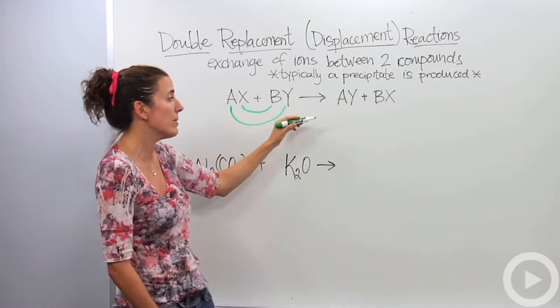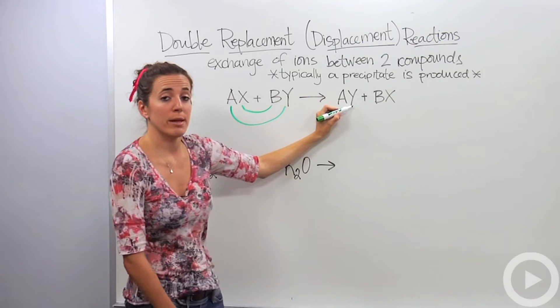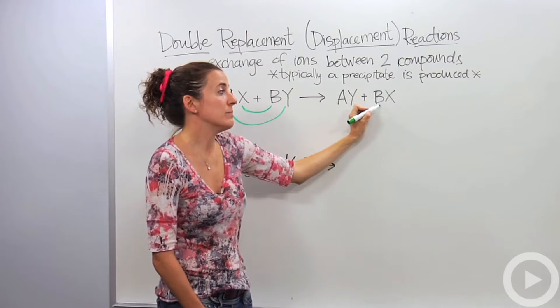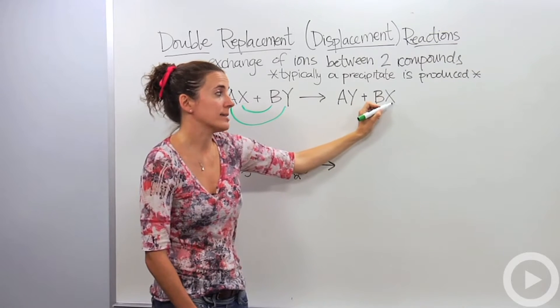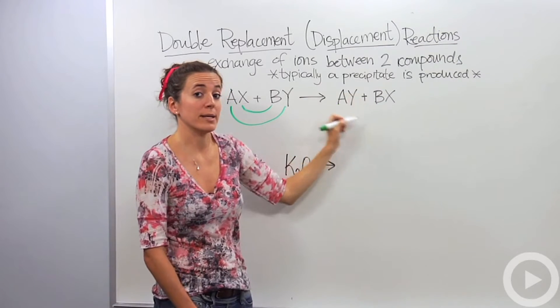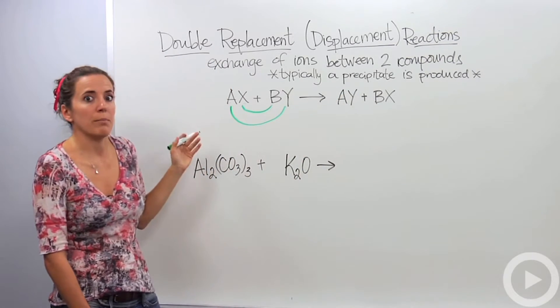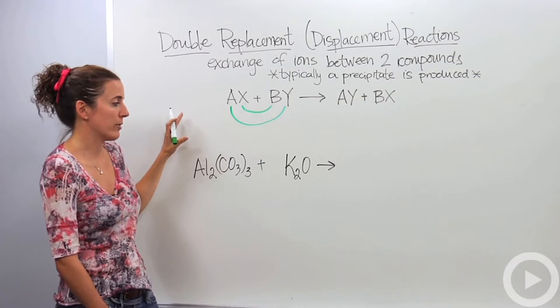Do not ever write the non-metal first. So in this case what's going to happen is AY is going to be a product, A is a metal, don't forget, and Y is our non-metal, plus BX. B is our metal, X is our non-metal. Don't get that mixed up, that can actually get you into trouble. So this is a good example of a skeletal example of a double displacement reaction.